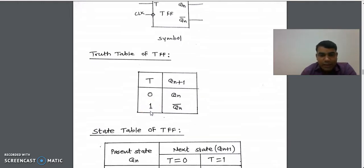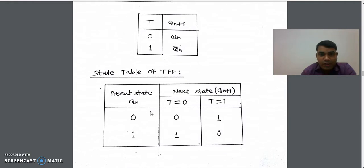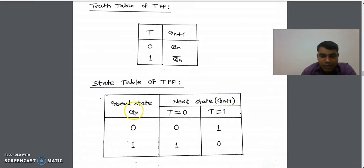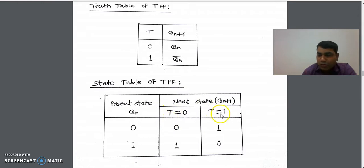Now we will see how to design the state table from this truth table. In the state table there are two columns: present state and next state. Present state is represented by QN and next state is represented by Q of n plus 1. In the present state column there is only one variable, so we write the possibilities 0 and 1. For next state we write the input possibilities for T flip-flop: T equals 0 and T equals 1.